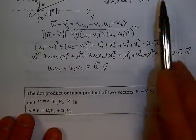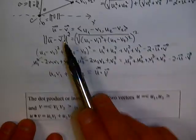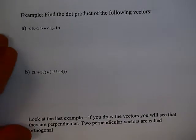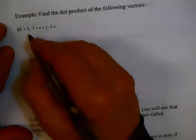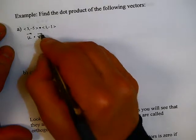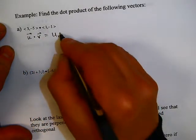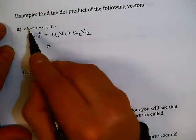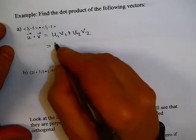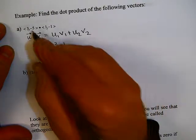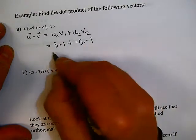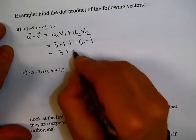Let's do some quick dot products. Remember, u dot v equals u1 v1 plus u2 v2. For the first example, the first coordinates give 3 times 1, plus the second coordinates give negative 5 times negative 1. That gives you 3 plus 5, or 8.